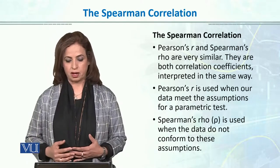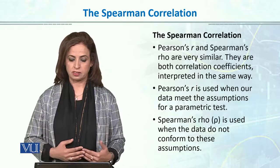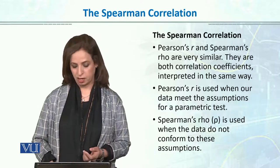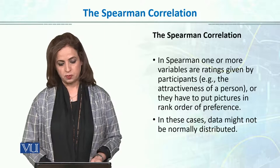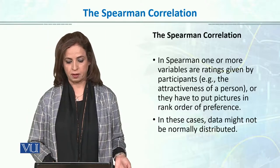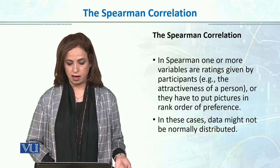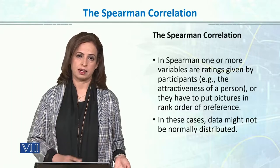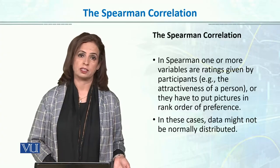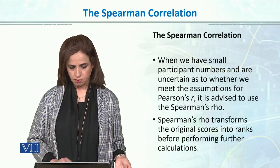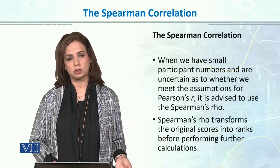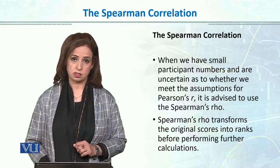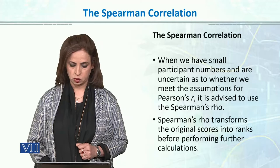Pearson and Spearman are very similar; both are correlation coefficients. Pearson is used when data meet the assumptions for parametric tests, but Spearman is used when parametric assumptions are not fulfilled. Spearman is also used when one or more variables are ratings given by participants — for example, attractiveness of a person or ranking pictures in order of preference. It is also a better choice when sample size is small and we are uncertain whether we meet the assumptions of Pearson R.